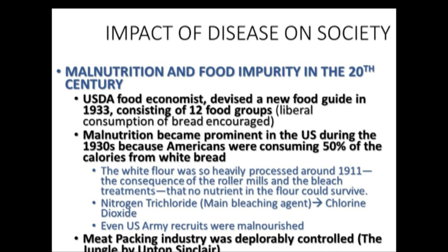Malnutrition became prominent because of Americans' love affair with white bread — 50% of adult calories came from white bread. The white flour was so heavily processed through mechanized milling and the bleaching process that very few, if any, nutrients were present. The bleaching process initially introduced nitrogen trichloride — later banned by the FDA — and was replaced with chlorine dioxide. Even U.S. Army recruits were quite malnourished, demonstrating a disturbing effect of processing on the American public at all levels.